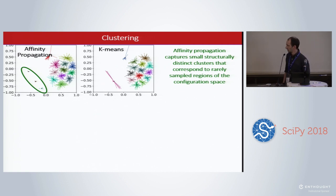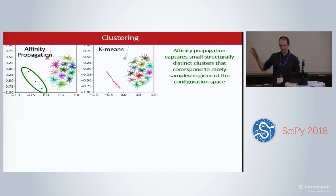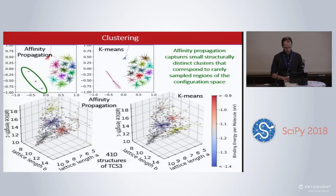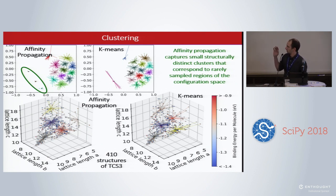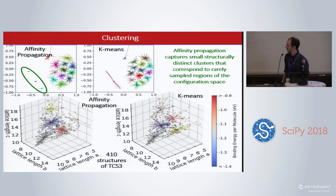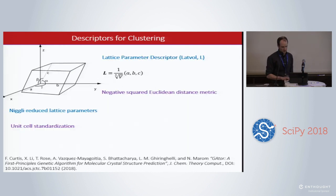These are just toy examples of what they are. The key difference is that with k-means you have to choose the number of clusters beforehand, leading to some outstretching — it forces those points to be in a cluster — versus affinity propagation, which is able to autonomously determine which structures belong to which cluster. Here we see an example of how k-means and affinity propagation cluster the same set of 410 crystal structures in lattice parameter space ABC. We see the k-means effect of reaching out to faraway points versus affinity propagation, which typically does better.